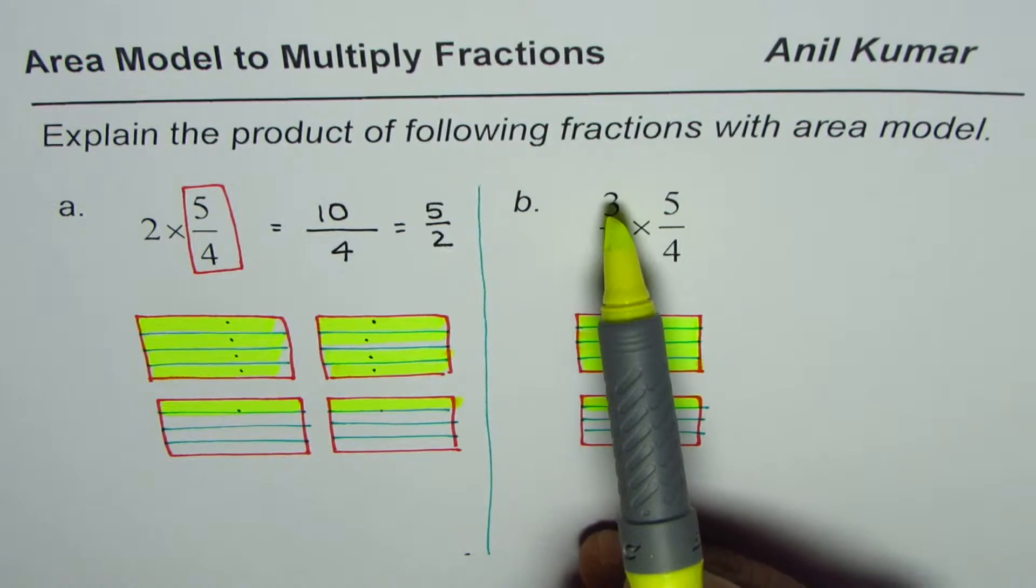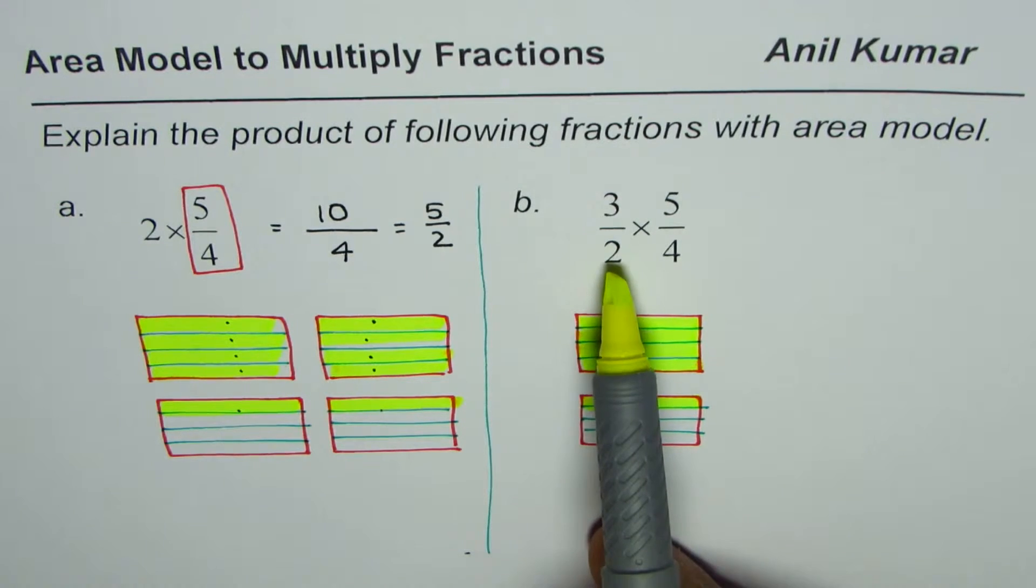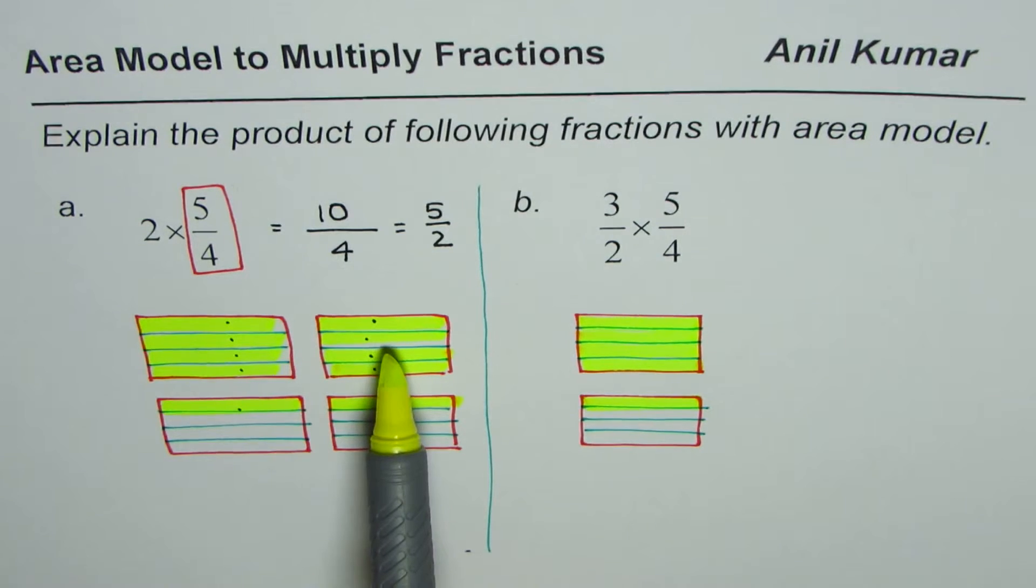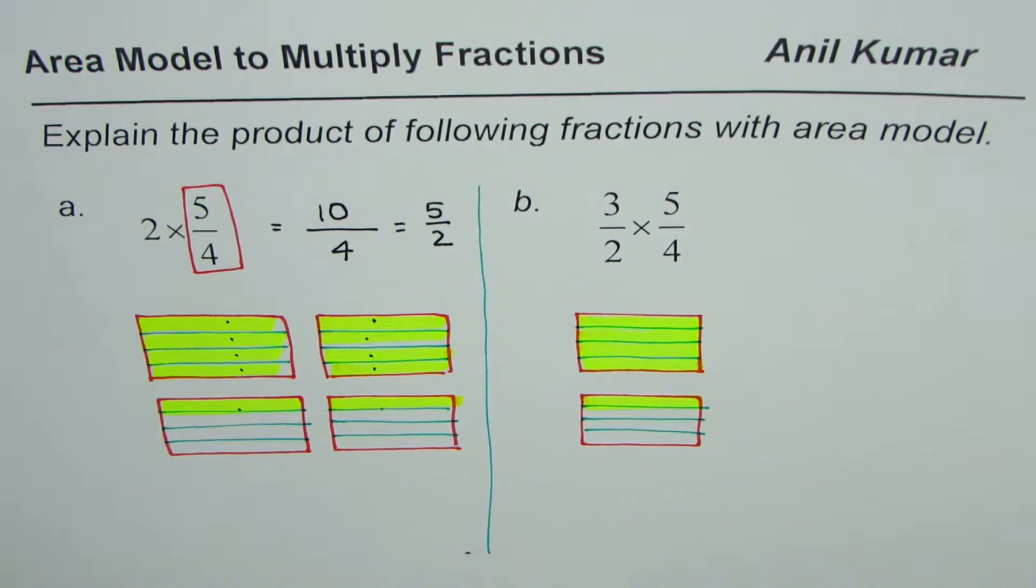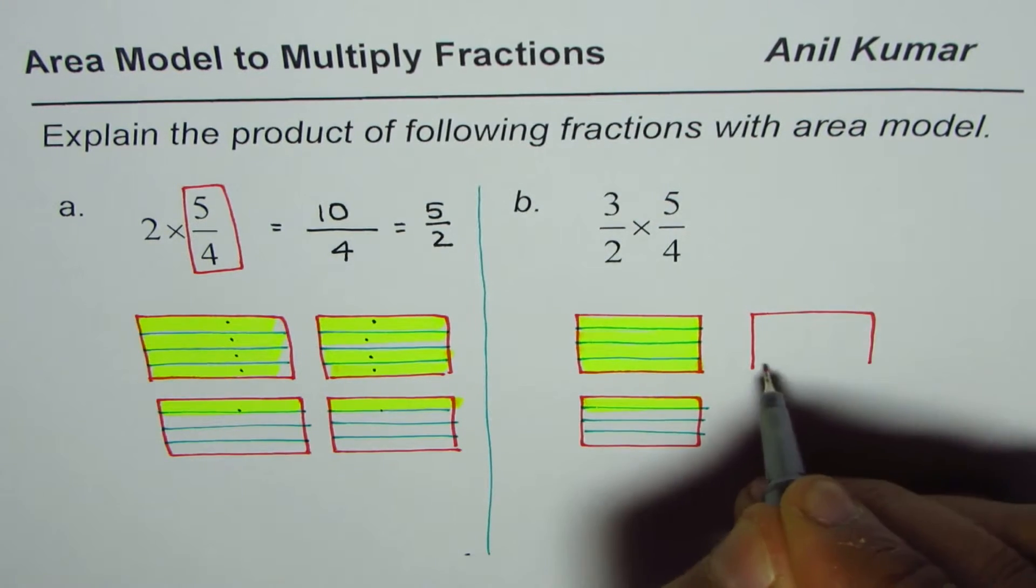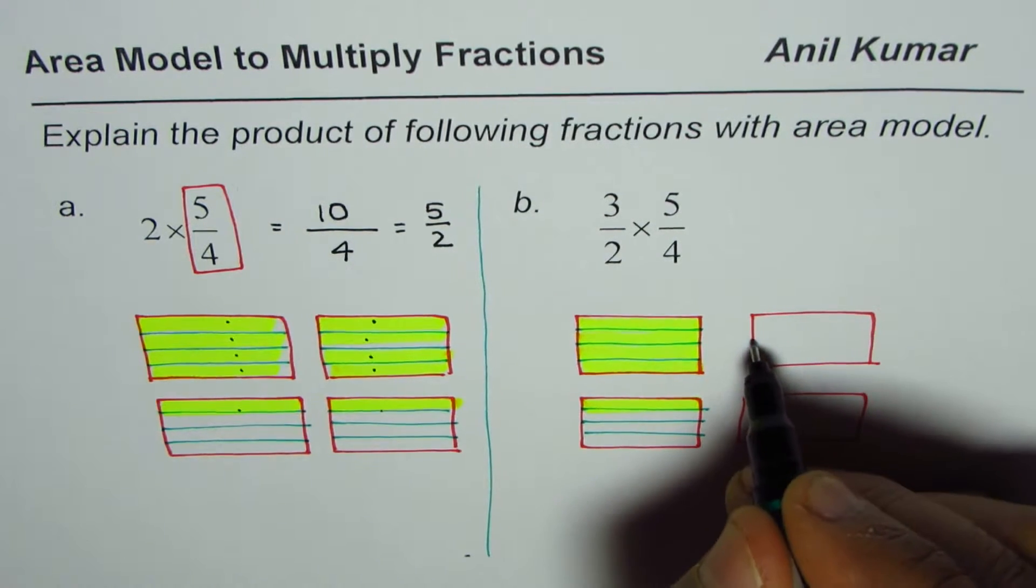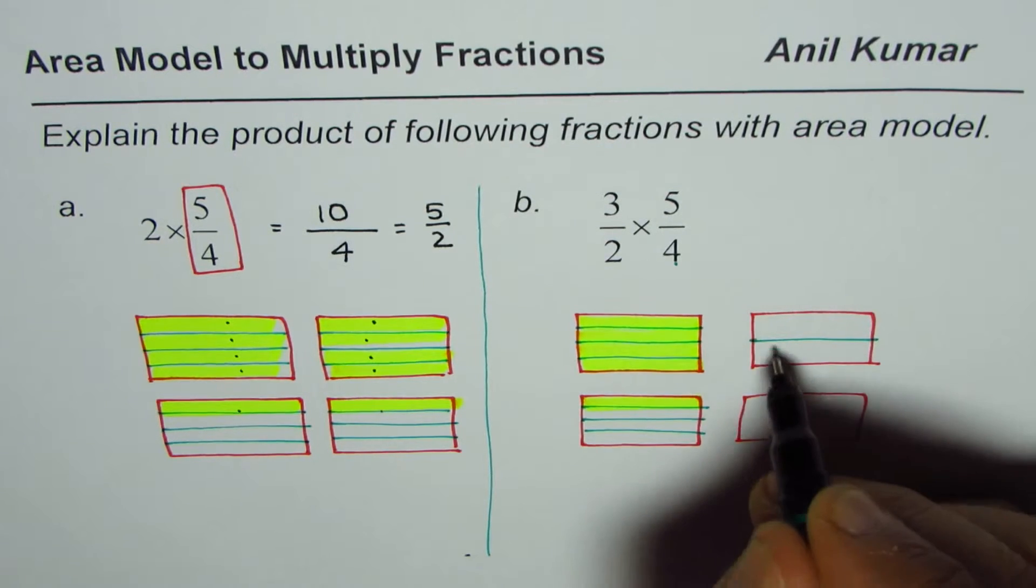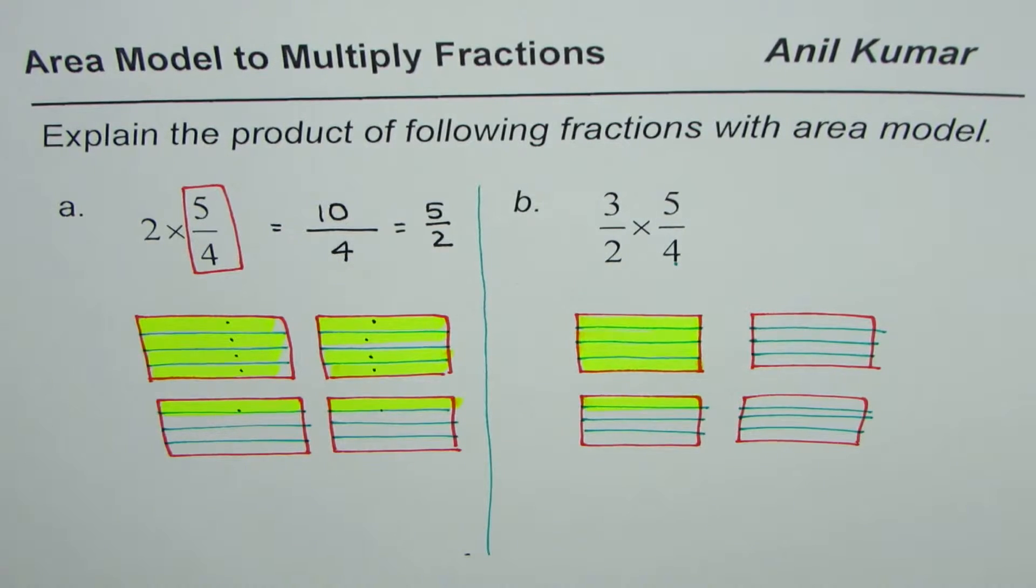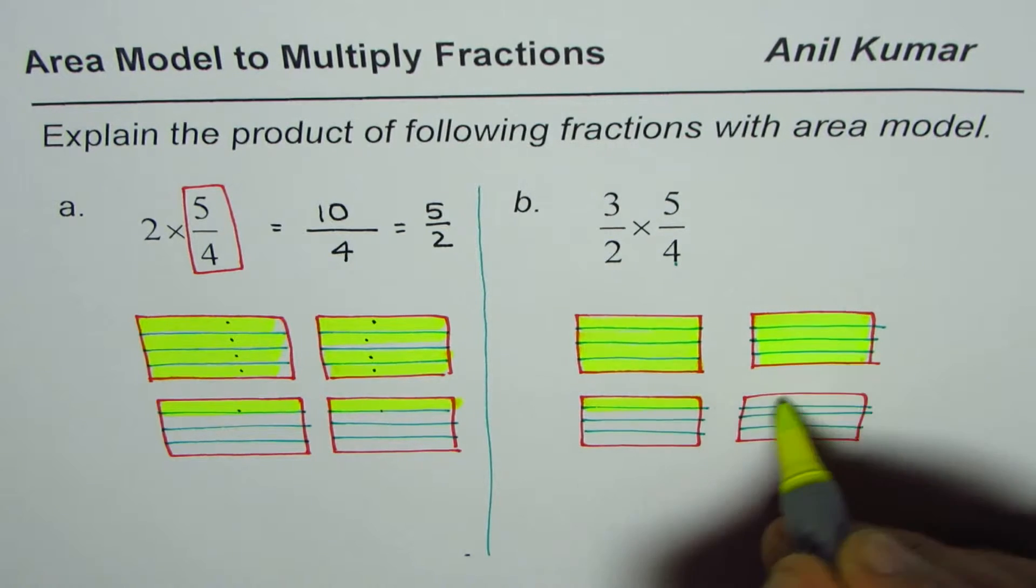But since we have to do 3 over 2 as the columns, 3 is more than 2. So this will not work for us. Just as it was double, we had to do one more. So we have to do one more, but select a part of it. I'm just copying this once again. So we have these rectangles copied, so that we could do 3 out of 2. Dividing them again into 4 equal parts, the denominator of our fraction, selecting 5 as we did earlier.